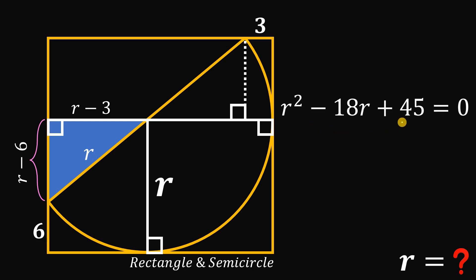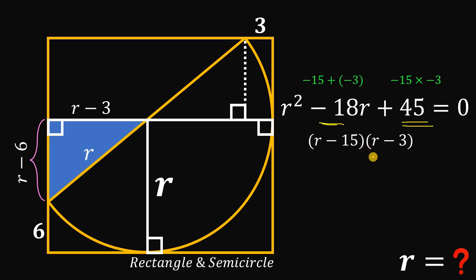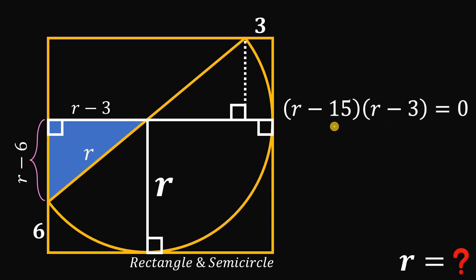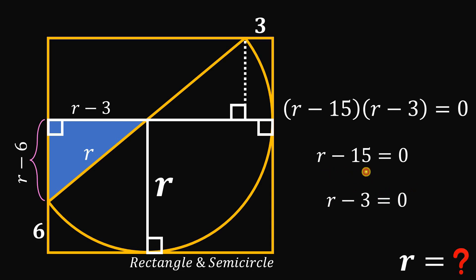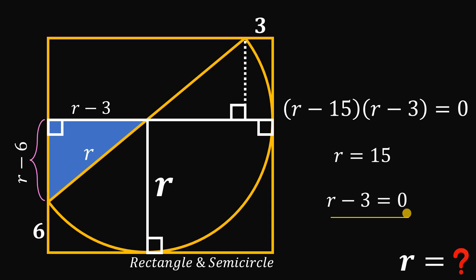To find r, let's factor this quadratic equation. Positive 45 equals negative 15 multiplied by negative 3, which gives positive 45, and negative 15 plus negative 3 equals negative 18. So we can factor as (r minus 15)(r minus 3) equals zero. Setting each factor to zero: r minus 15 equals zero gives r equals 15, and r minus 3 equals zero gives r equals 3.